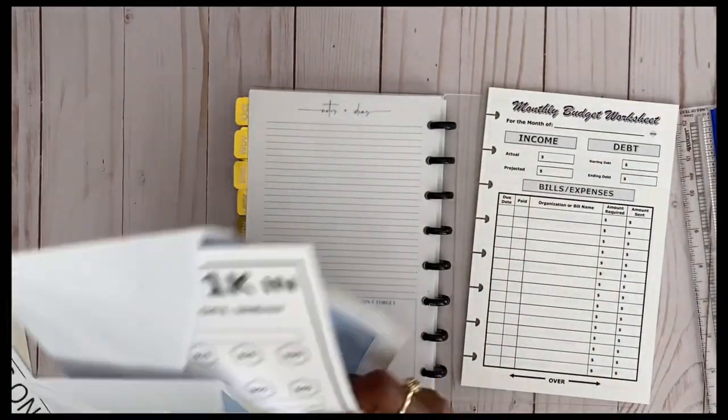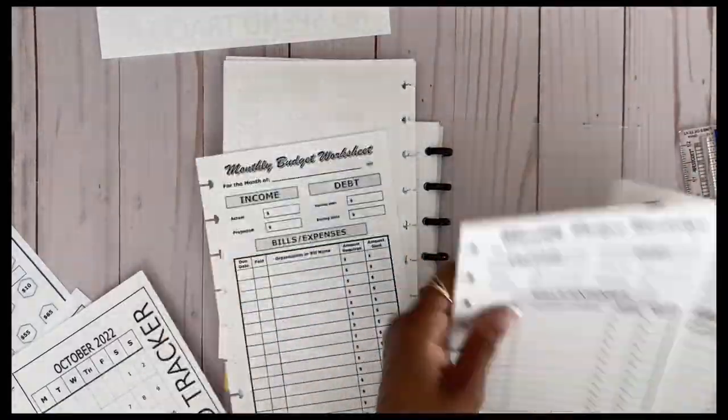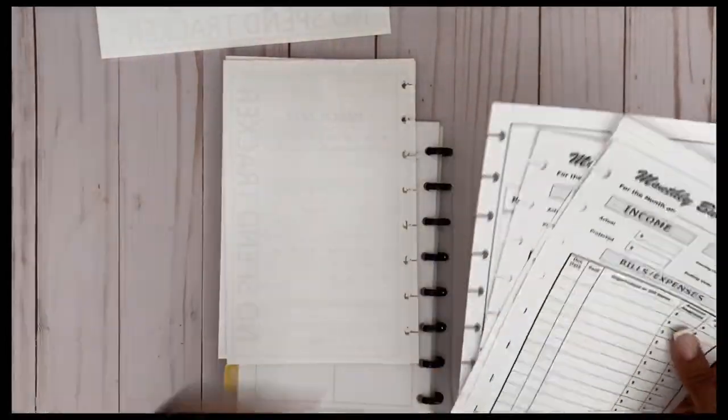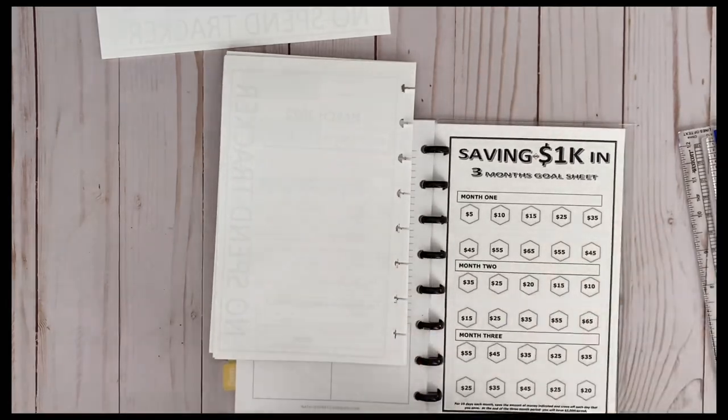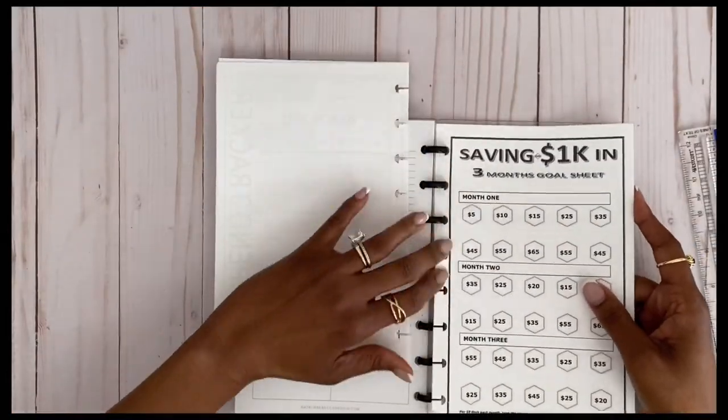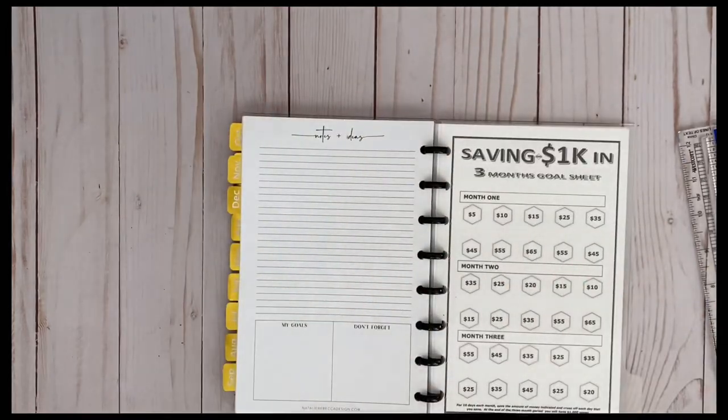I'm removing the extra paper and placing in a divider. She did indicate that she wanted to also be able to do financial planning as part of her planner. So I have monthly budgets, no spend tracker, as well as a savings goal, and I'm putting those into the planner now. All of these inserts are part of my shop if you want to check those out.